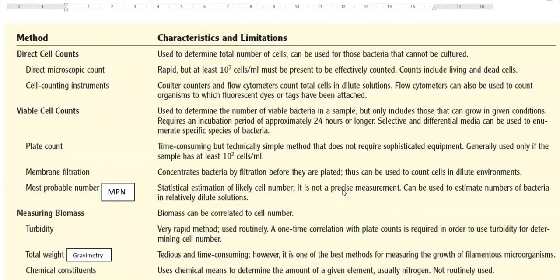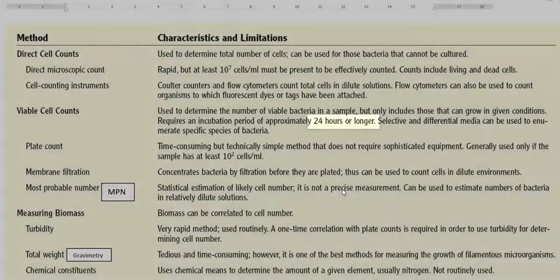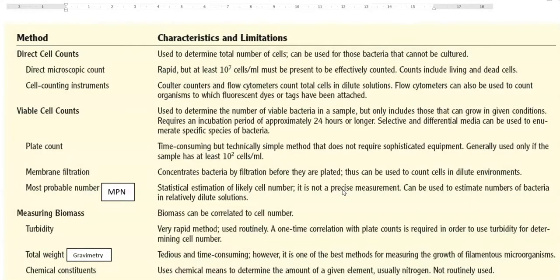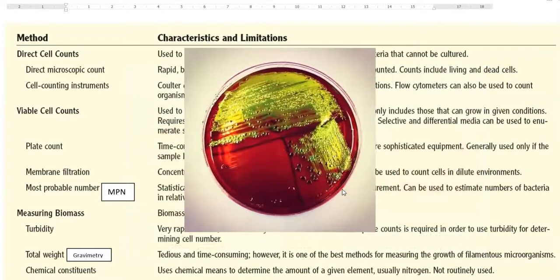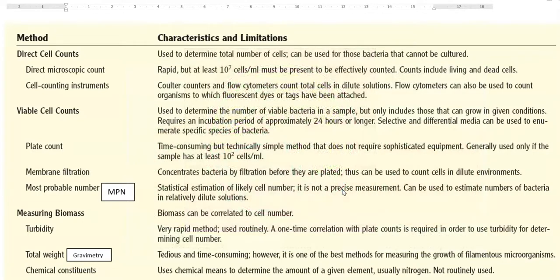Here the explanation for viable cell count is it is used to determine the number of viable bacteria present in a sample, but it includes those that can able to grow under a given condition. For example, under a given temperature or pH, which organism is growing, that alone can be counted. And it requires an incubation period of approximately 24 to 48 hours or even longer. Then different kinds of medias can be used to enumerate species specific groups of bacteria. That is selective and differential medias can be used to enumerate the bacteria present in the sample.